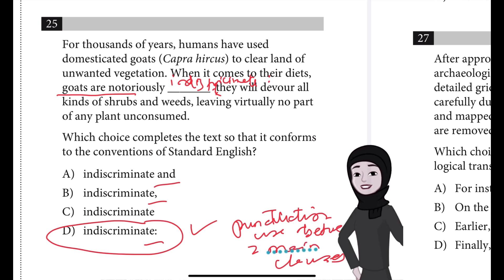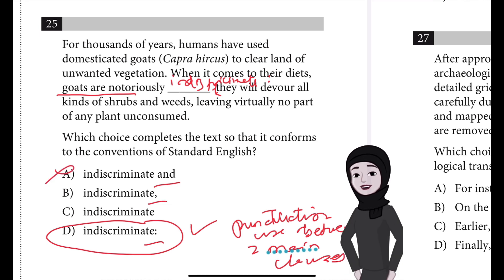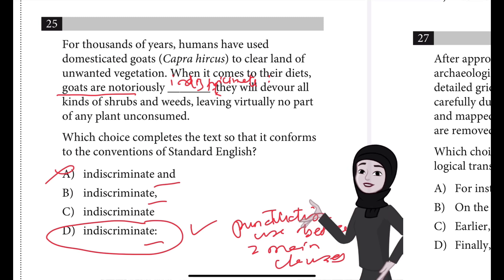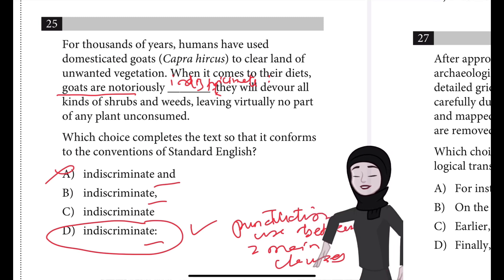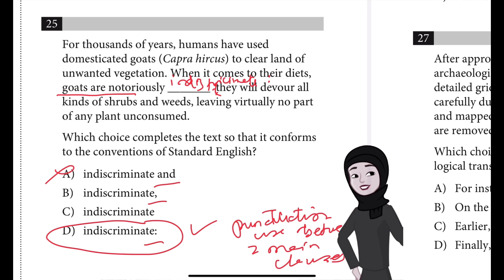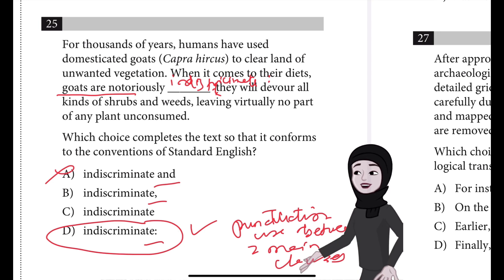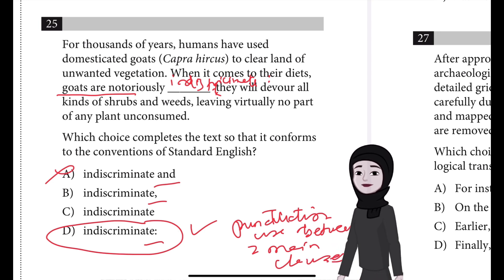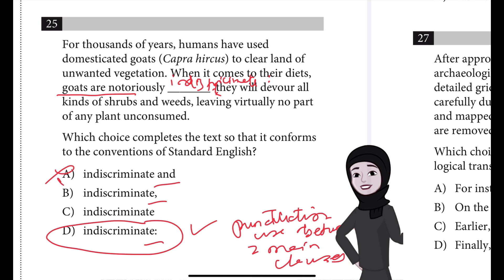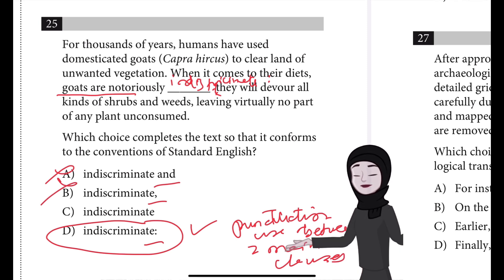Choice A is incorrect because when coordinating two longer main clauses such as these, it's conventional to use a comma before the coordinating conjunction. Furthermore, the conjunction 'and' fails to indicate that what follows is an explanation of goats' non-discriminatory behavior when it comes to their diets. Choice B is incorrect because it results in a comma splice — a comma can't be used in this way to join two main clauses.